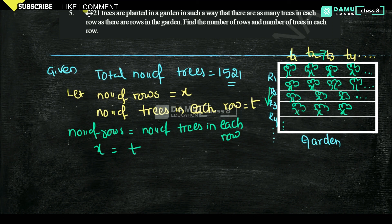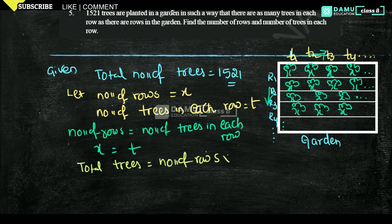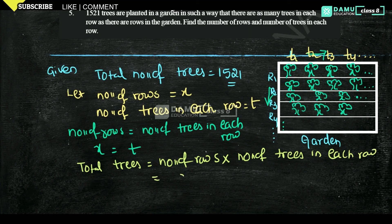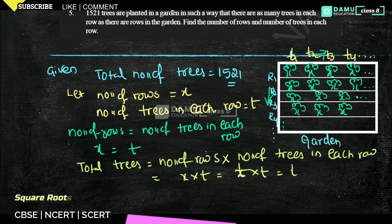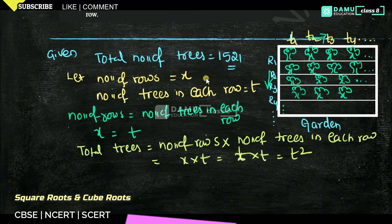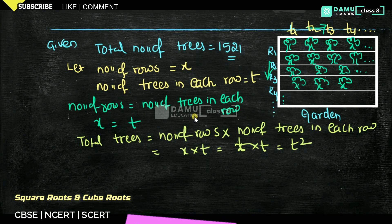So total number of trees — how can we write that? Total trees will be equal to number of rows into number of trees in each row. That is x into t, and since x equals t, we get t into t, which is t squared. So t squared will be equal to 1521.